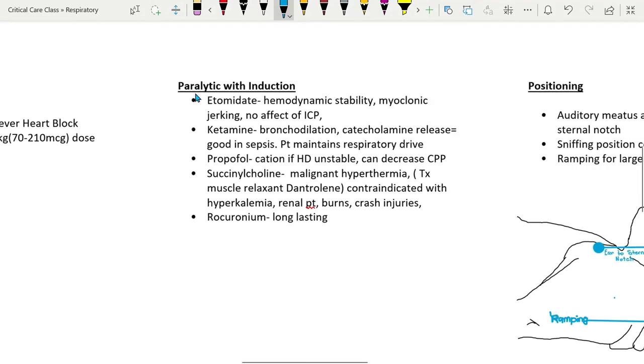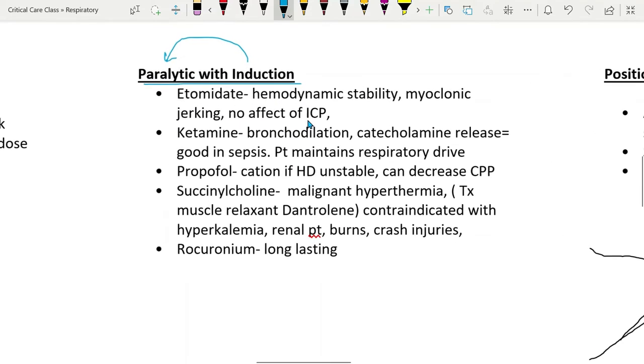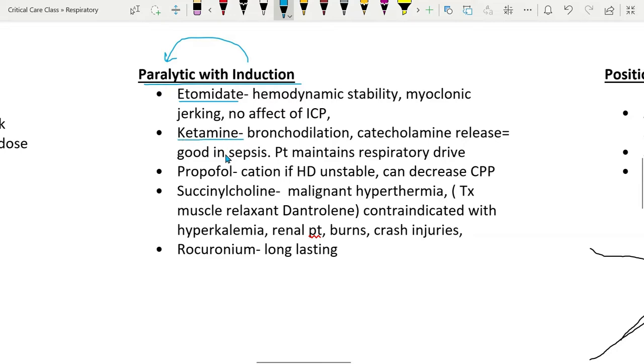Next is paralytic and induction. First is induction to sedate the patient and then the paralytic to relax the musculature. Induction usually achieved with etomidate, ketamine, propofol, and lorazepam. Etomidate has little effect on blood pressure and is hemodynamically friendly. However, myoclonic jerking can be seen with etomidate. As well as etomidate does not have effect on intracranial pressure, so it's safe with head injuries. Contraindications could be adrenal suppression, which decreases steroid synthesis. And patients have a higher likelihood to vomit with etomidate.